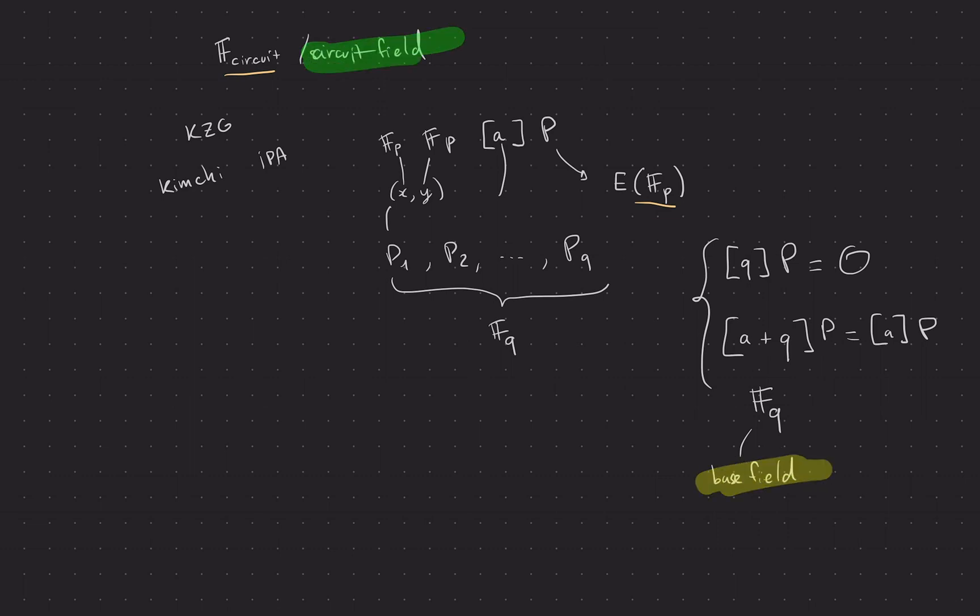And so once we go back to our scheme, imagine we have a prover, and that prover is instantiated over some elliptic curve. Let's call our elliptic curve E1. Our circuit is over the scalar field, right? But our proof, the proof we create, is over this base field.